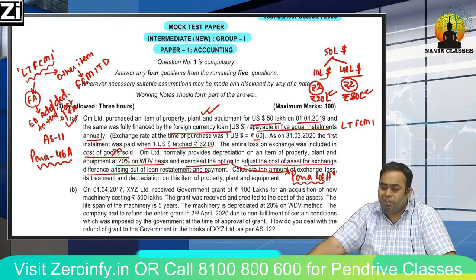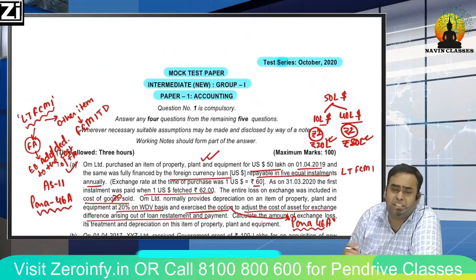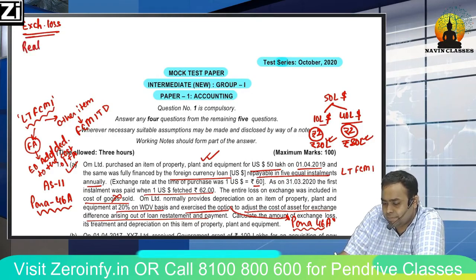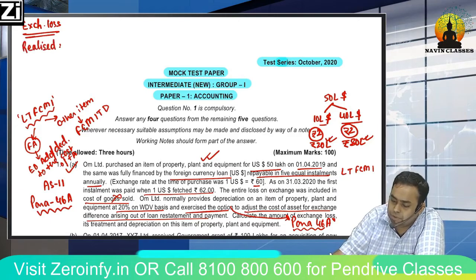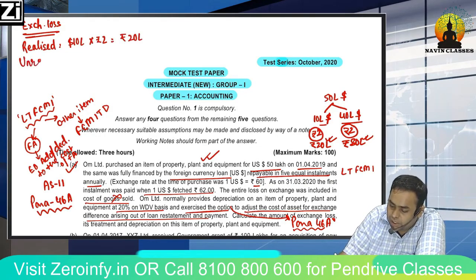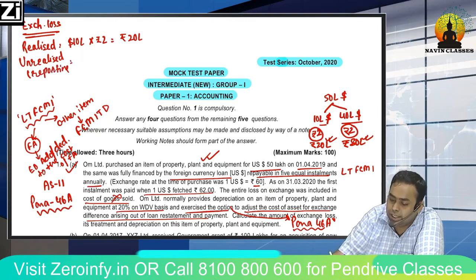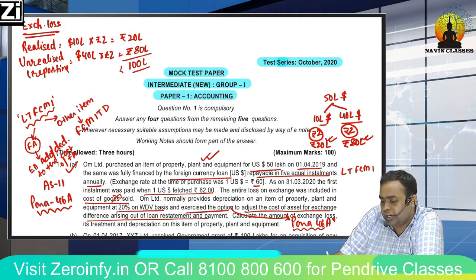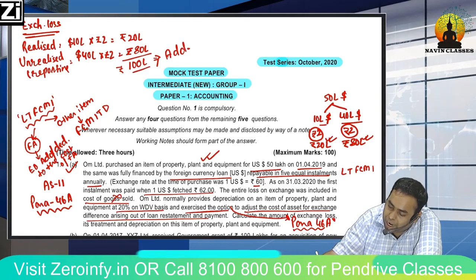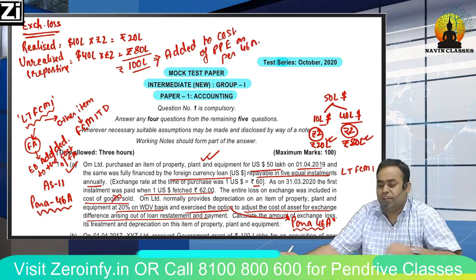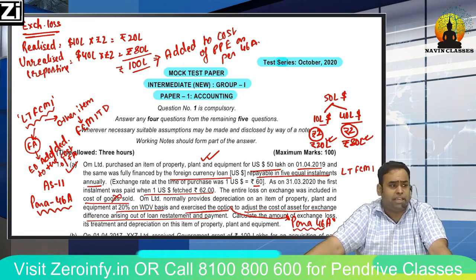Calculate the amount of exchange loss, its treatment, and depreciation on this item of property, plant and equipment. First, realized loss: 10 lakh dollars × ₹2 = ₹20 lakh. Unrealized loss on reporting: 40 lakh × ₹2 = ₹80 lakh. Total exchange loss = ₹100 lakhs. This shall be added to the cost of PPE as per Para 46A.